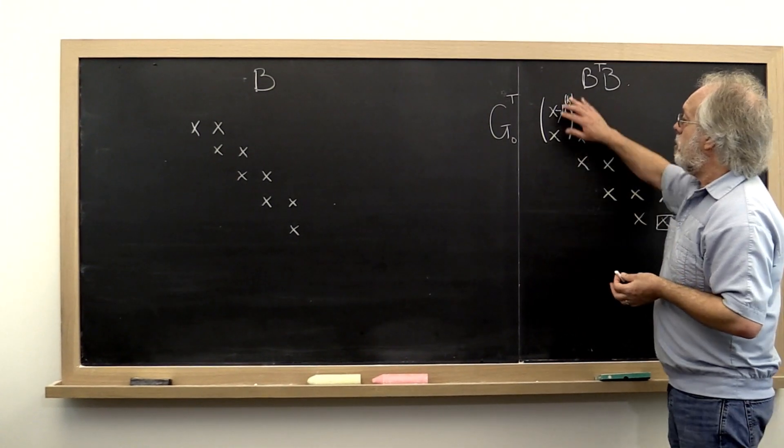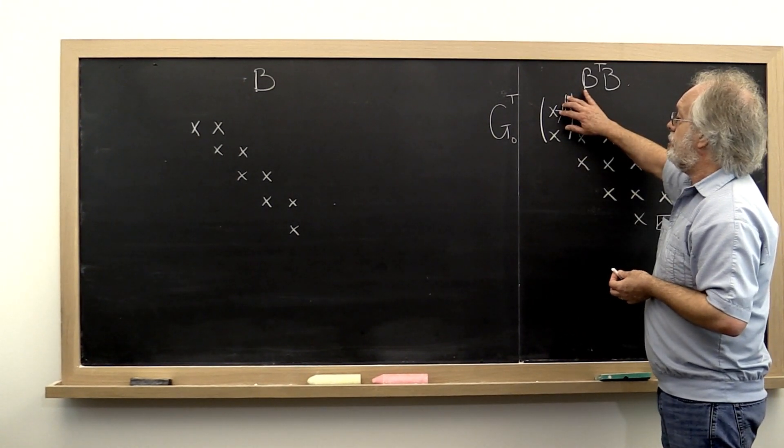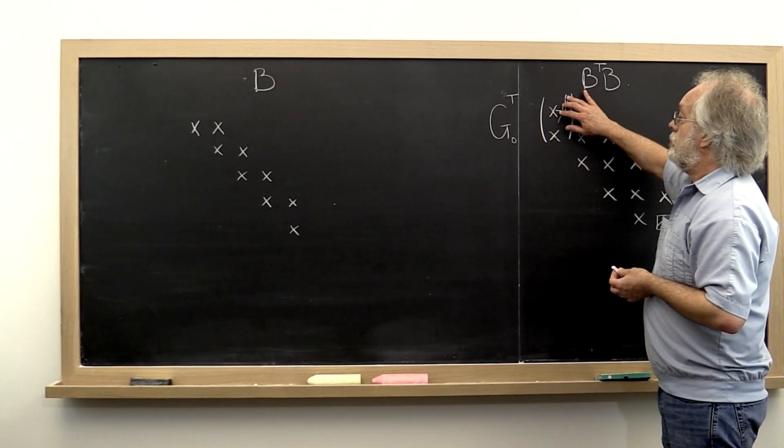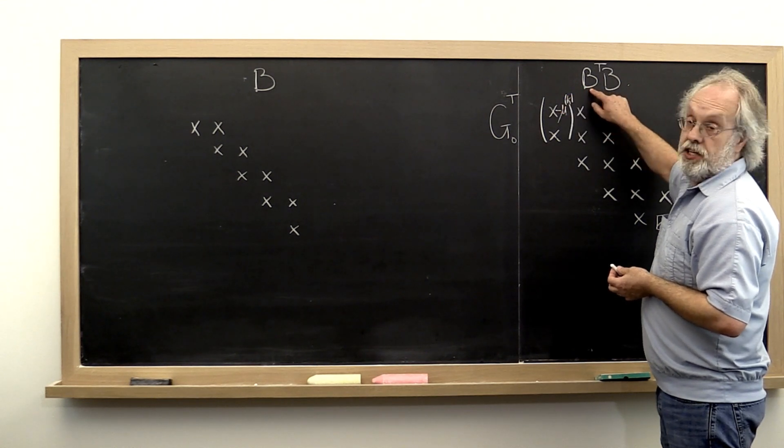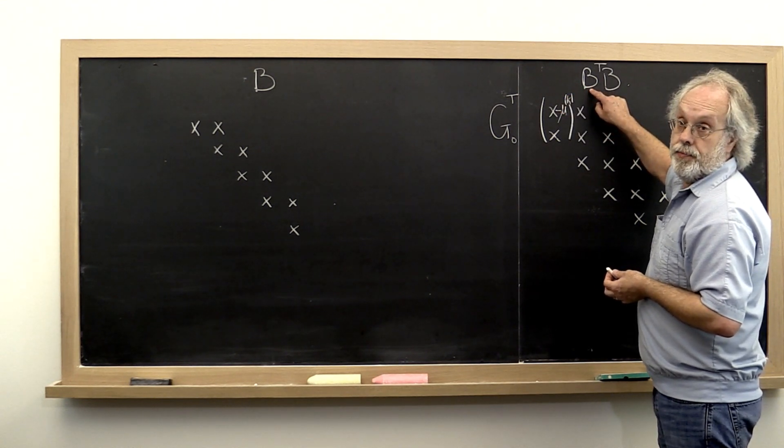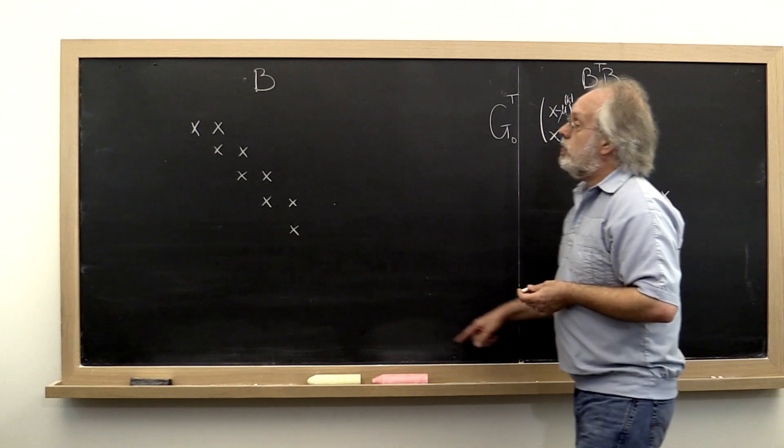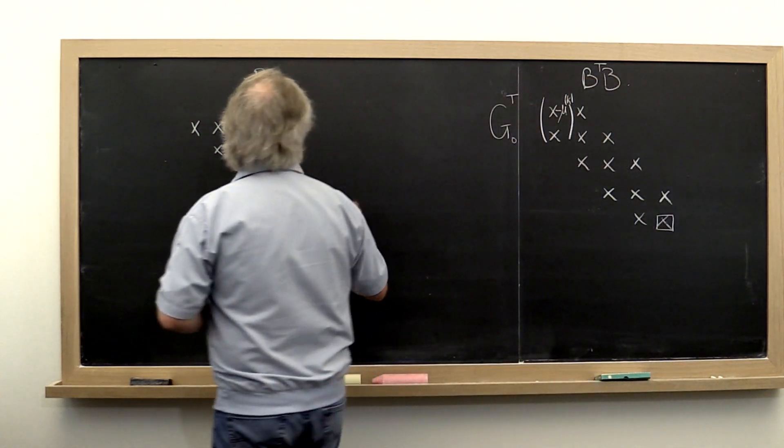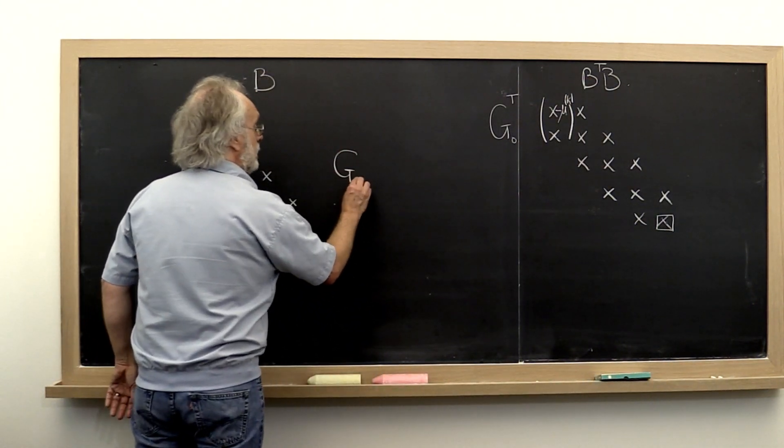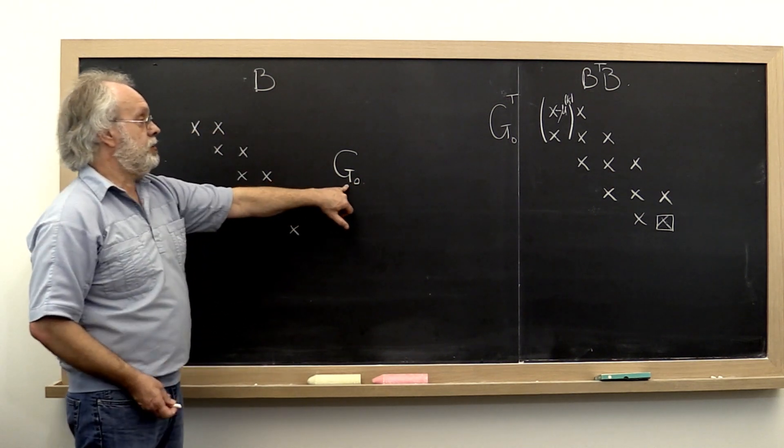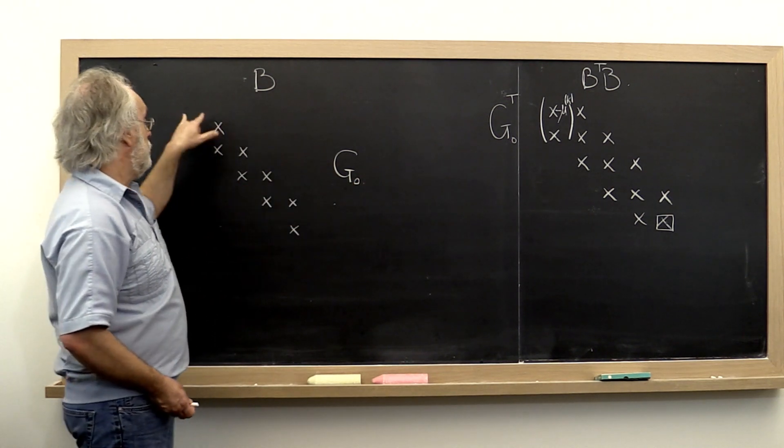Instead of then applying that Givens rotation from the left and the right to this matrix B transpose B, what we do is we go over here and we recognize that we can instead just apply G0 from the right to this matrix.